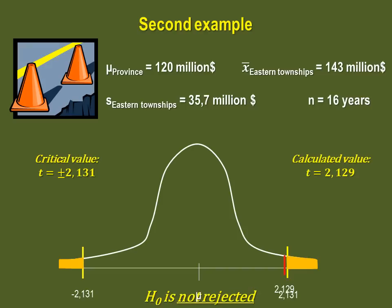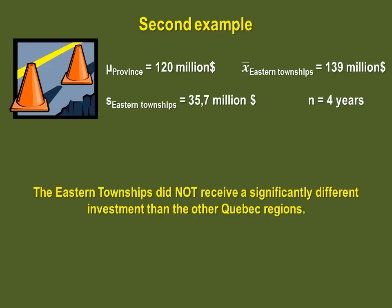It's important to say not rejected as opposed to accept the null hypothesis. This might seem finicky, but think of it as a trial. When the accused person is declared not guilty, we are not necessarily saying he or she actually did not commit the crime. We are saying we do not have enough evidence to prove that he or she did. So, it's the same thing here. Step 7 asks us to summarize the results, so we can state that the eastern townships did not receive a significantly different investment for road construction than all of the other Quebec regions.